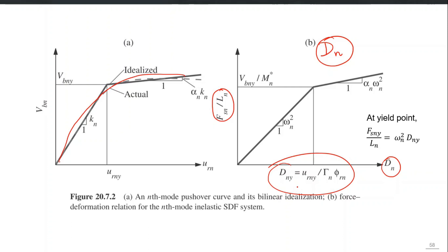Once you get the target displacement for each mode, you push your building using the modal inertial load pattern of that mode up to its own target displacement and extract the responses for each mode. Those will already be the peak responses, and then you combine those responses using a modal combination rule, for example SRSS or CQC.